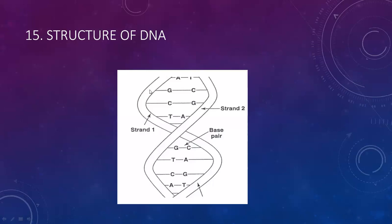The DNA strand is made up of sugar-phosphate-sugar-phosphate repeating units. Adenine and guanine are purine bases; thymine and cytosine are pyrimidine bases.